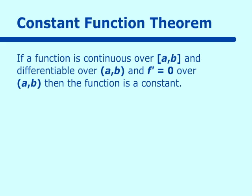This is very obvious because you already know that if you have a function y equals five and you take its derivative, it is equal to zero. They are just saying this backwards: if you know a function has a derivative of zero, then you know it to be a constant function. So if you know the function's derivative is zero, then you know the function is a constant on an interval or over the entire function.